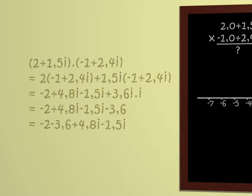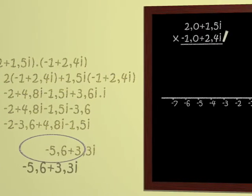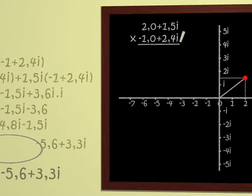Giving us in all, minus 5.6 plus 3.3i. There you are. We know how to multiply complex numbers. In other words, we can multiply points in a plane. That's amazing.